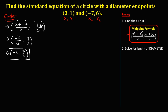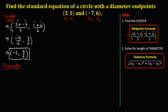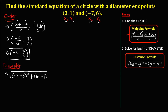Now, to solve for the length of the diameter, we use the distance formula: the square root of (x₂ minus x₁)² plus (y₂ minus y₁)². Substituting: x₂ is negative 7 minus x₁ which is 3, giving negative 10, squared. Plus y₂ minus y₁: 6 minus 1, which is 5, squared.